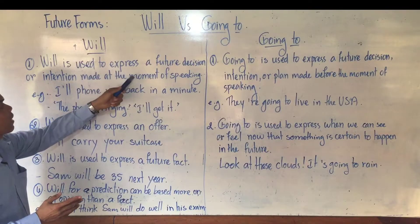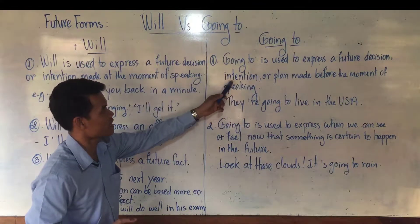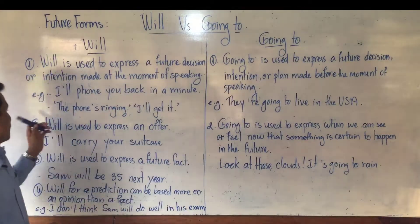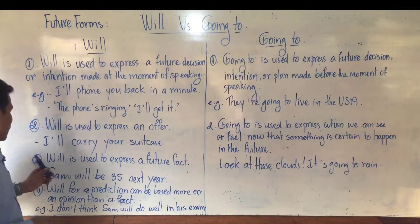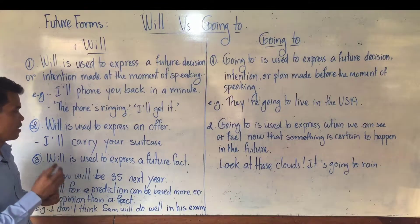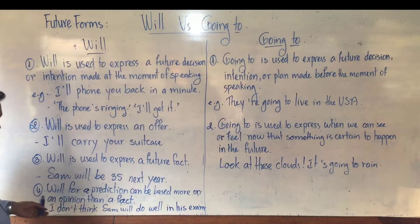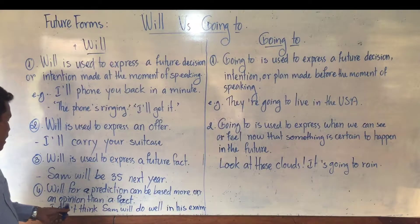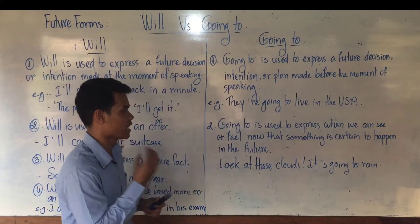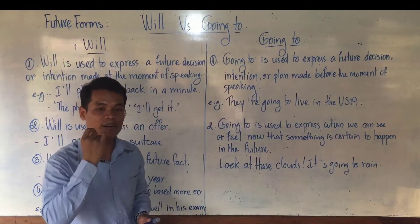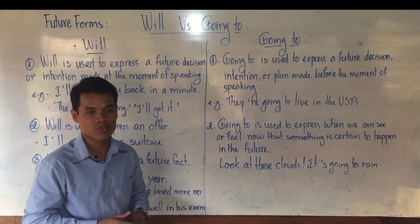Okay, again — will is used to express a future decision or intention made at the moment of speaking, while going to is used to express a future decision, intention, or plan made before the moment of speaking. Number two: will is used to express an offer; going to has no offer use. Number three: will is used to express a future fact, also called future simple, while going to is not used for that. Number four: will for prediction is based more on an opinion, while going to is used to express when we can see or feel now that something is certain to happen — a present fact based on physical evidence.